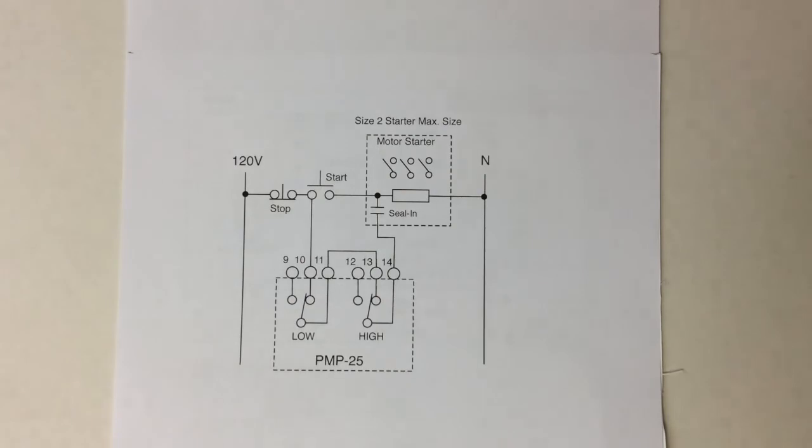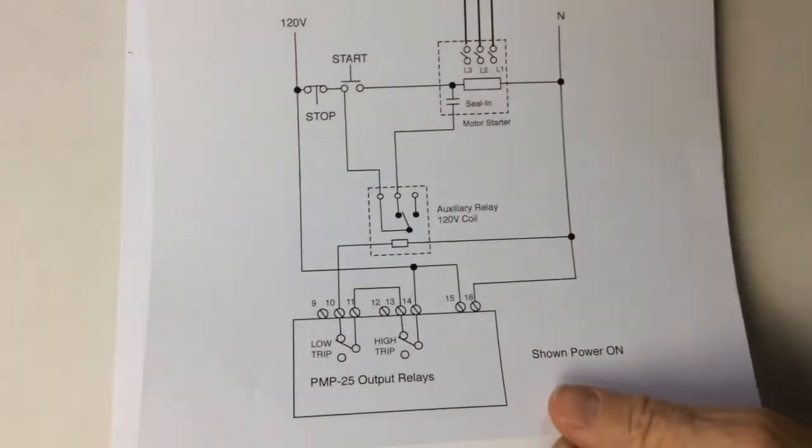The PMP25 output contacts can directly control size 1 and size 2 starters. For larger motor starters, an auxiliary relay must be used between the PMP25 and the motor stop circuit.